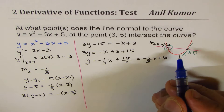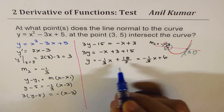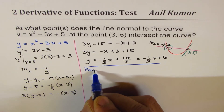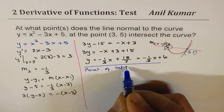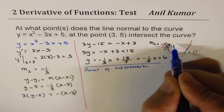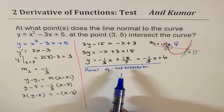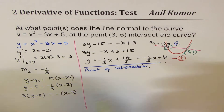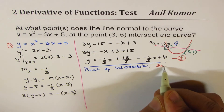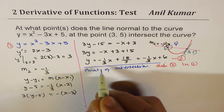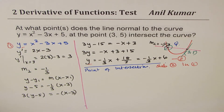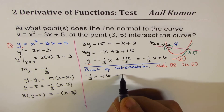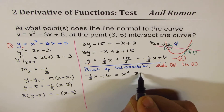Now we have the equation of the normal line. We need to find its point of intersection with the parabola — let's call this point Q. We'll substitute the normal line equation (equation 2) into the curve equation (equation 1) by equating the y-values. So: -x/3 + 6 = x² - 3x + 5.